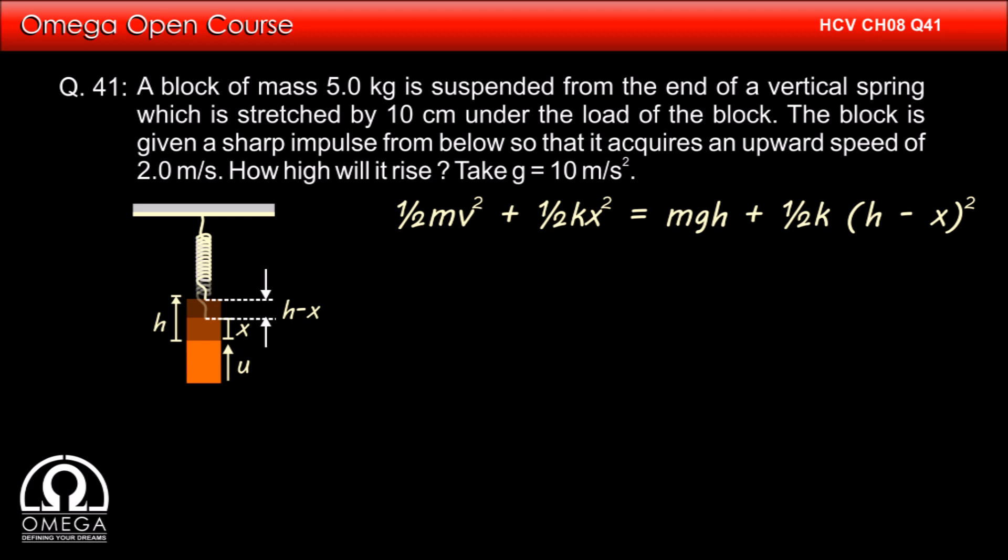As per the law of conservation of energy, the initial energy of the system must be equal to its final energy. Therefore, half mv square plus half kx square is equal to mgh plus half k into h minus x whole square.